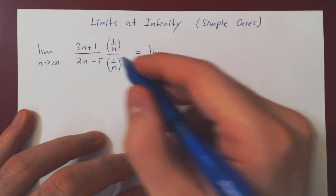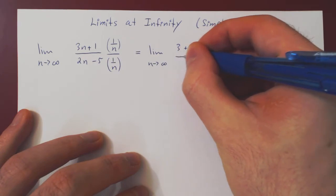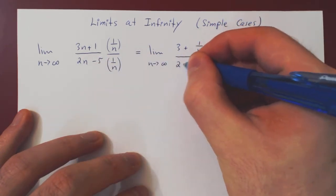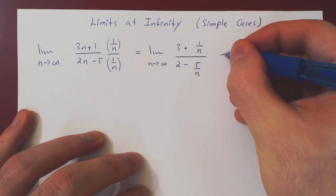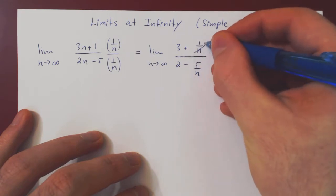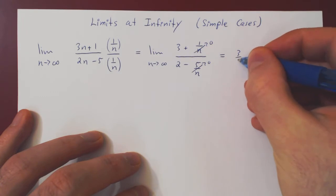And if we multiply through, we'll have the answer in just one line. So 3n times 1 over n is 3, plus 1 times 1 over n is 1 over n, over 2n times 1 over n is 2 minus 5 over n. And now you can see the limit is trivial. As n goes to infinity, 1 over n and 5 over n both shrink to 0, and we're left with 3 over 2. And that's it.